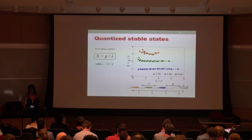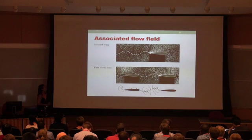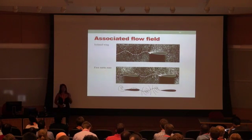So to understand what's going on, then we said, let's look at the flow. Let's look at what's going on. We seed the flow with beads and we shine a laser sheet that intersects the wing path. And we can look at the flow and what it looks like.